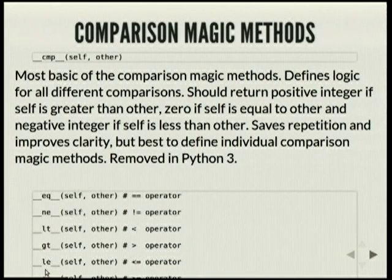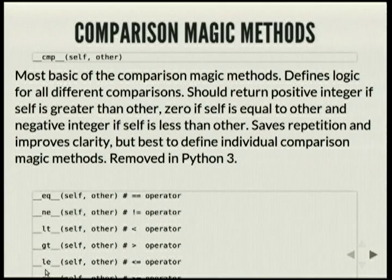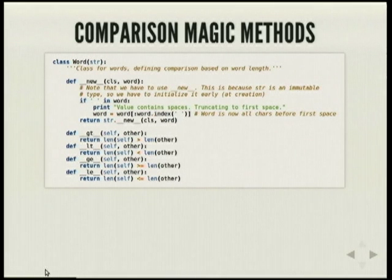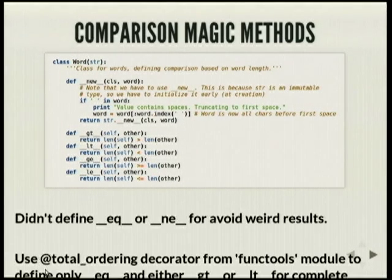As you can see: equals, not equals, less than, greater than, less than or equal to, greater than or equal to — they all overload the corresponding operators. You don't actually need to define all of them. You can just define __eq__ and __lt__ or __gt__, and then Python can figure out how things are working. You can use the total_ordering decorator from the functools module to achieve the exact result.